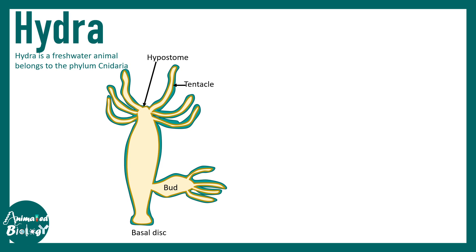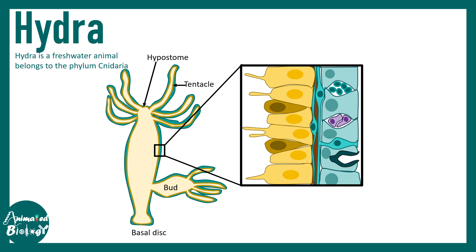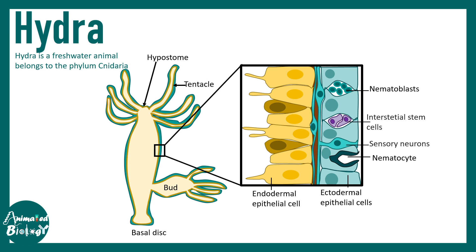If you zoom into the body wall of Hydra, you would see there are two basic layers: endodermal epithelial cells and ectodermal epithelial cells. Hydra is diploblastic, so it has only two layers. Among these two layers there is heterogeneity in cell type — there are nematocytes, nematoblasts, interstitial stem cells, sensory neurons, gland cells, and epithelial cells. All of these cell types are essential for the function of Hydra.